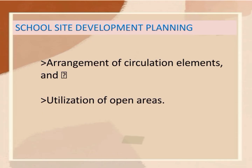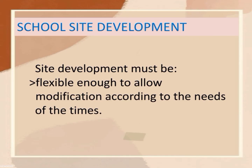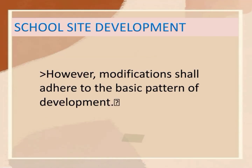Utilization of open areas: open spaces affect the character of development and vice versa. Open space also stabilizes other land uses, reduces noise, and conserves natural resources. Site development must be flexible enough to allow modification according to the needs of the times. It should allow removing inconsistencies in the validation of its structures when it is being reused in a new planning situation. However, modifications shall adhere to the basic pattern of development.